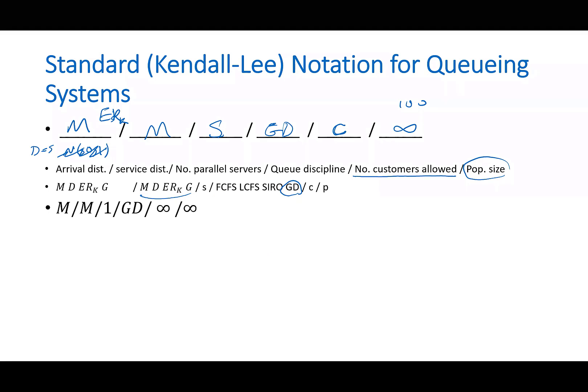Arrival is exponential. Service process is also exponential. There's only one server or one line, one queue. And there's a general discipline for picking people from the line. Infinite capacity. There's no capacity in the system, and anyone could go to that, join that line. So infinite population size.